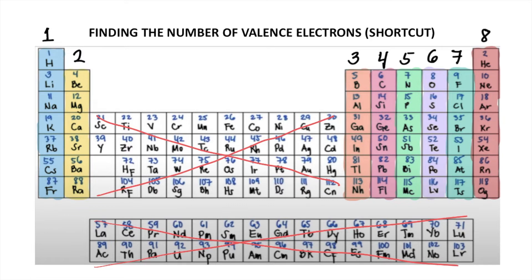So for example, all of the elements under column 1 has 1 valence electron. All of the elements under column 2 has 2 valence electrons. All of the elements under column 3 has 3 valence electrons, so on and so forth, until you reach the 8th column.